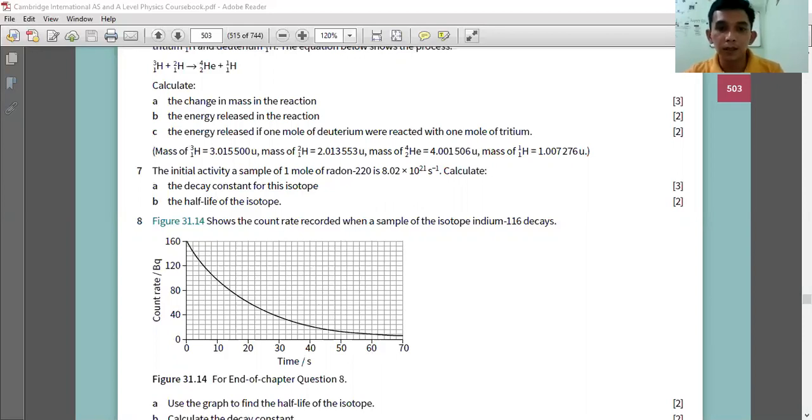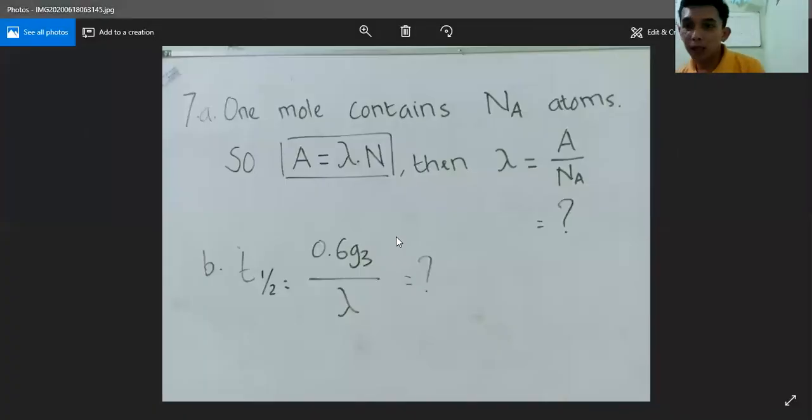The question is: find the decay constant for this isotope. So we know that one mole contains NA atoms, the Avogadro constant. We also know that the activity is lambda times N. Then if you want to find lambda, the decay constant, it will just simply be dividing activity over the Avogadro constant.